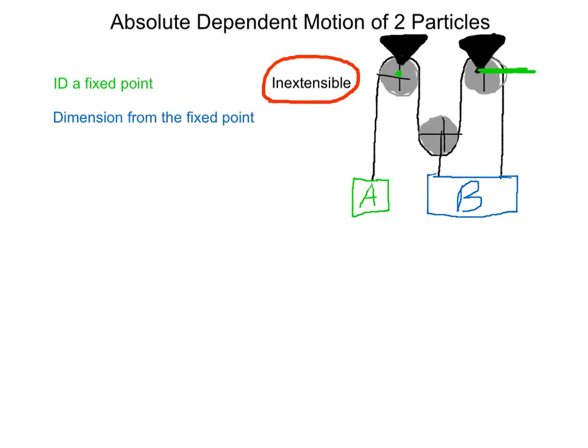The next thing we want to do is dimension from a fixed point. So let's make some dimensions. From our fixed point we have that length, which is S of B, and we also have this length, which is S of A.